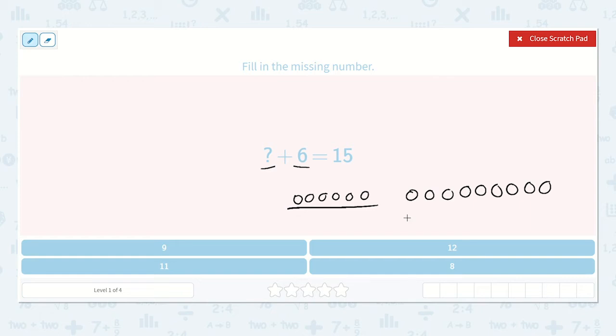So let's count to see how many there are. 1, 2, 3, 4, 5, 6, 7, 8, 9. So 9 plus 6 is equal to 15.